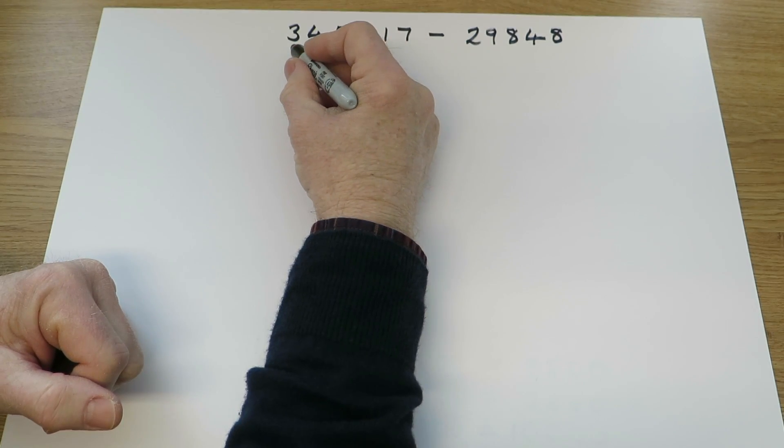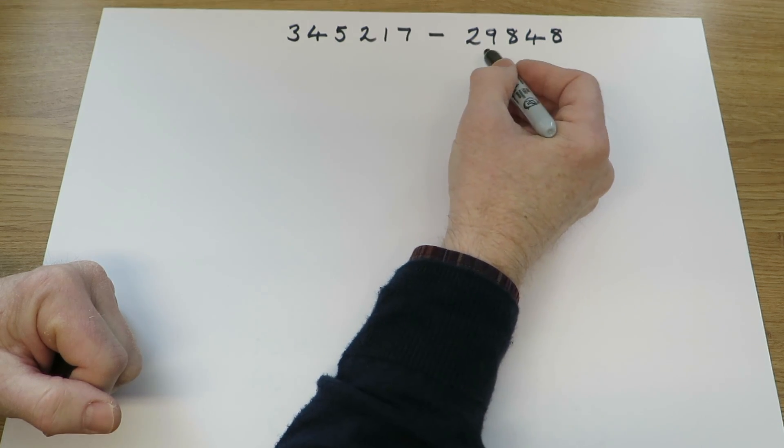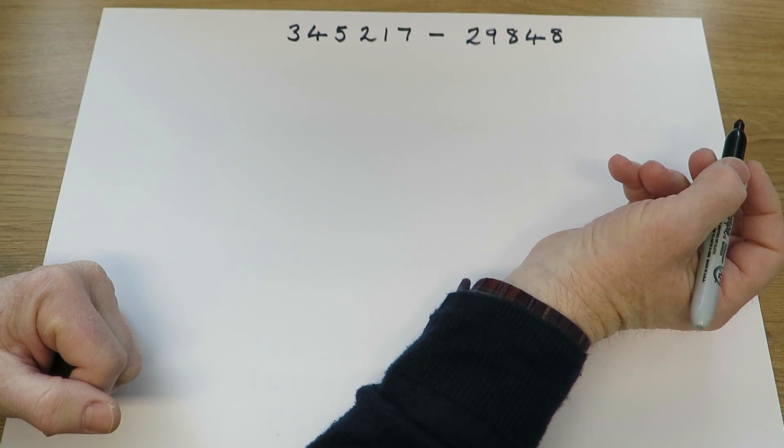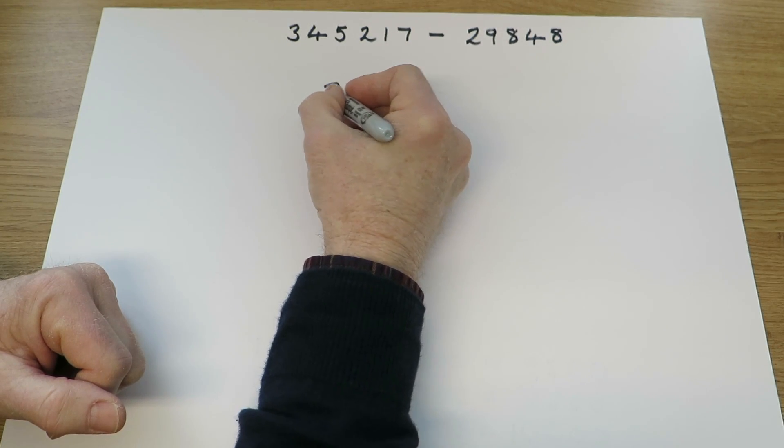So, for example, looking at this question, 345,217 minus 29,848, the children have to be certain to put the numbers in the correct columns.